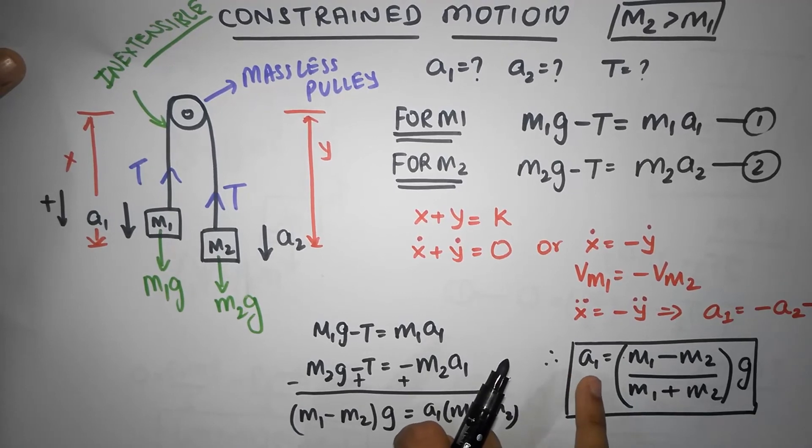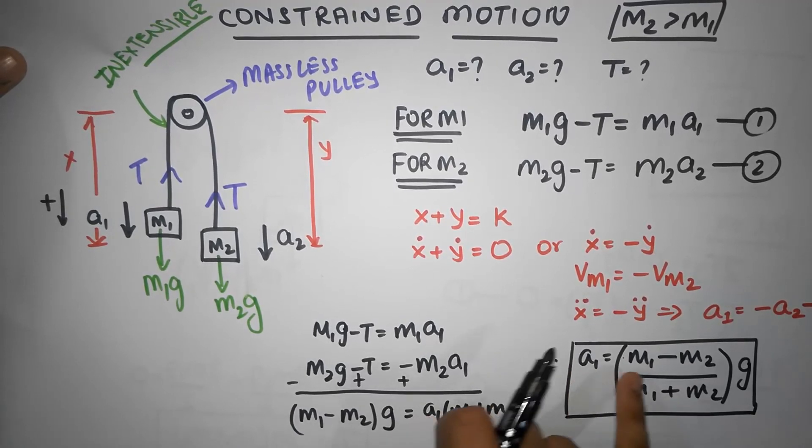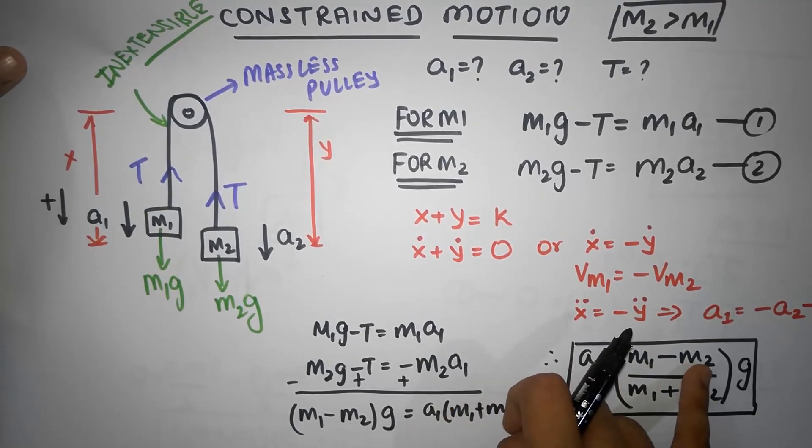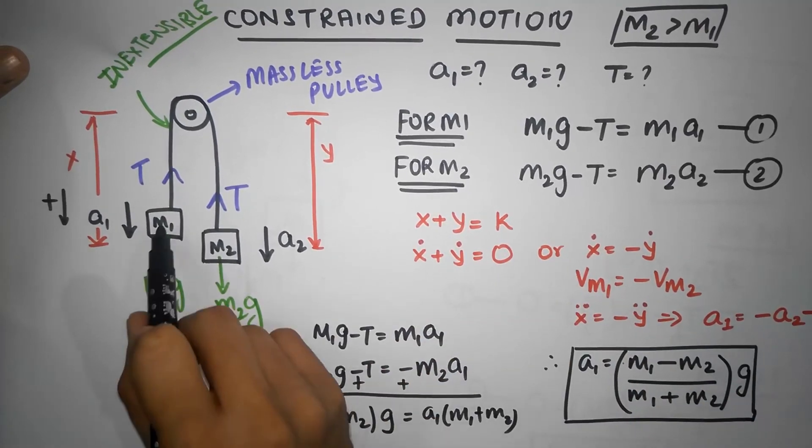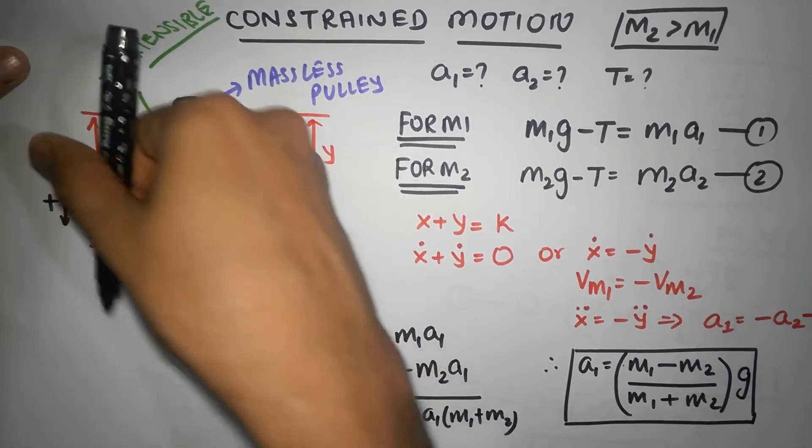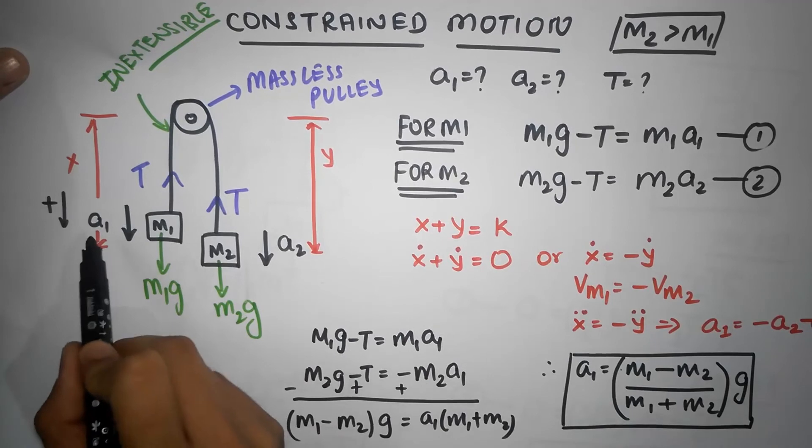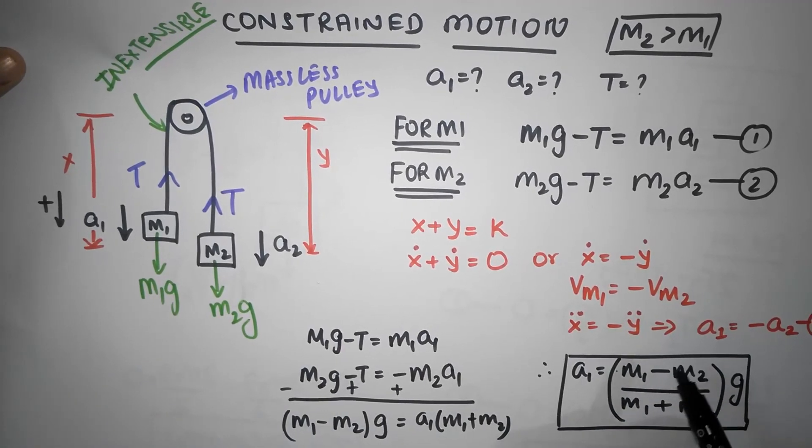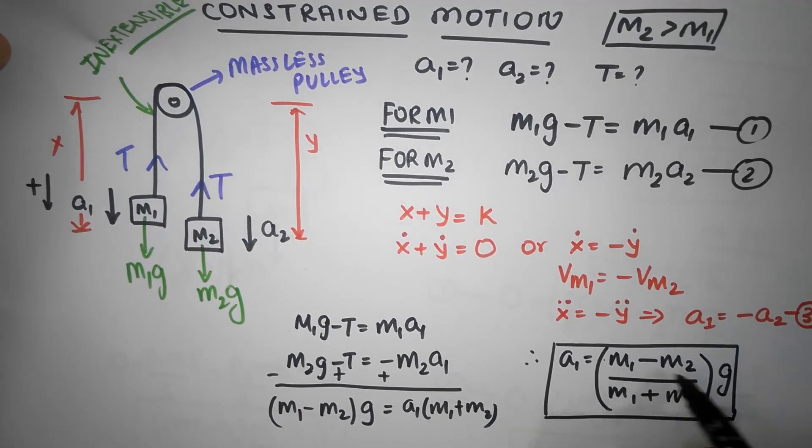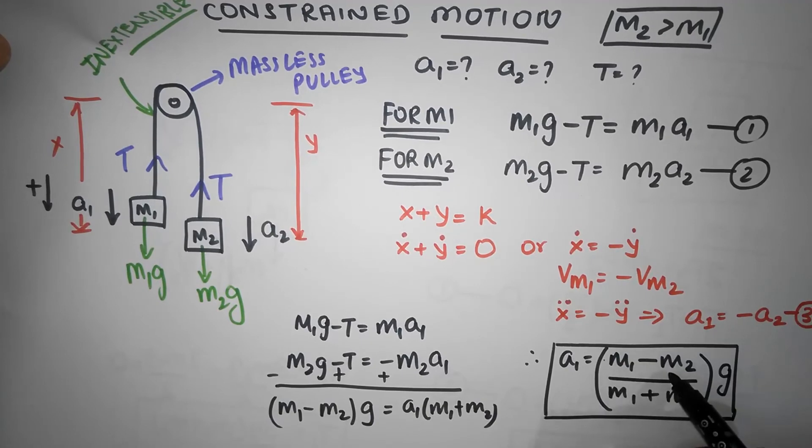Notice that the acceleration A1 will be positive if M1 is greater than M2, which makes perfect sense. If M1 was greater than M2, M1 would go down and M2 would go up, so acceleration A1 would be a positive number.